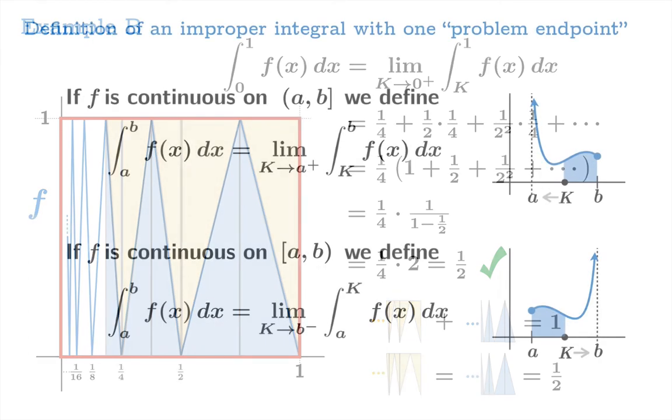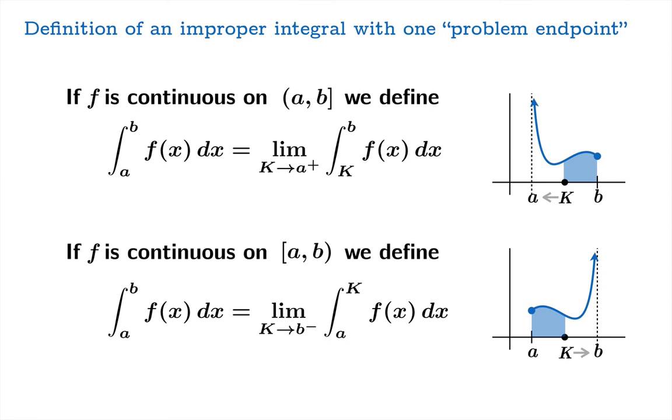So in conclusion, when you have a bad spot, either at one endpoint or the other, define your improper integral to be the usual integral over a finite interval. And then you let the endpoint sneak in towards the bad spot. And you take the limiting value of those integrals. And that's how you evaluate the improper integral.